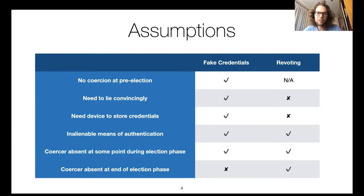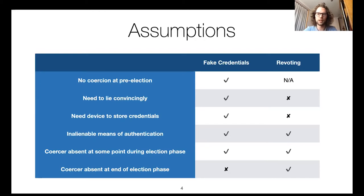Re-voting and fake credentials both make strong assumptions to achieve coercion resistance. Both require some form of inalienable means of authentication — to prevent impersonation in the fake credential case during pre-election, and in the re-voting case to ensure the voter can always re-vote at the end. This could, for example, be a national identity card or something based on biometrics. In both cases the coercer must be absent at some point during the election phase. However, in re-voting we need the slightly stronger assumption that the coercer is also absent at the end of the election phase, but we don't need to assume the coercer is absent during the pre-election phase.